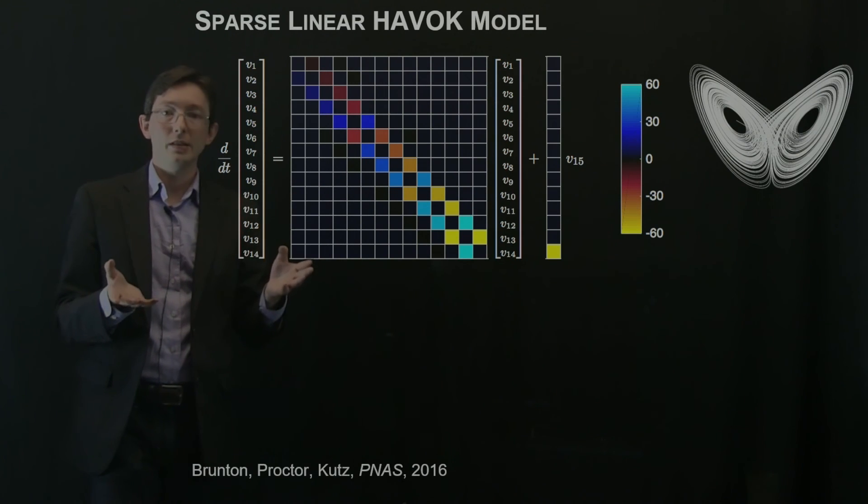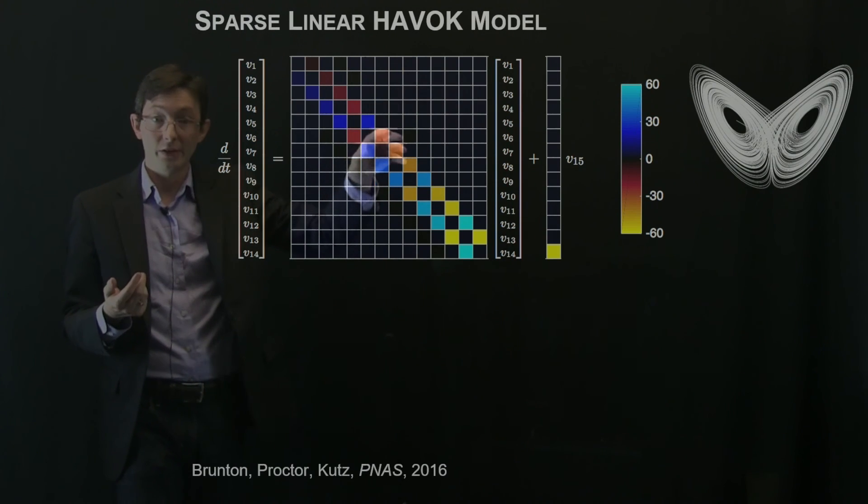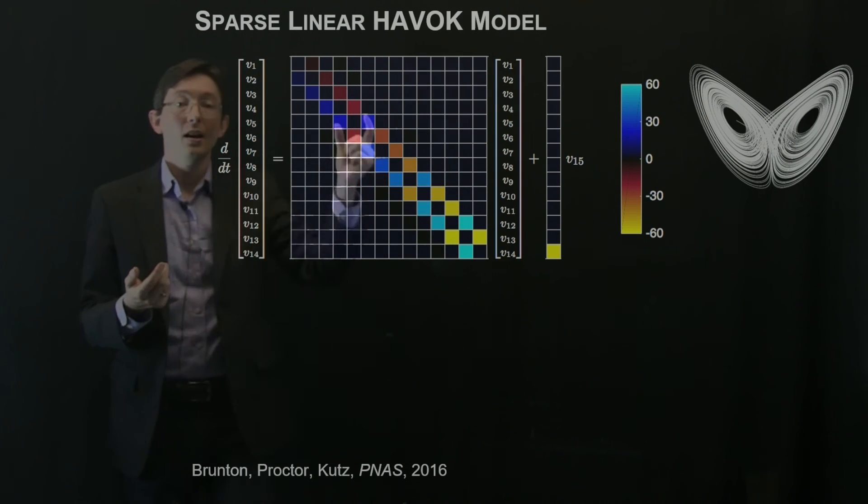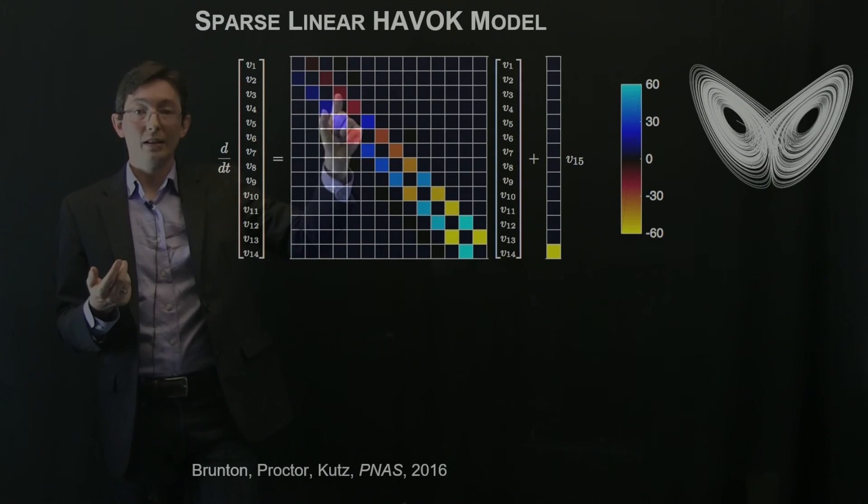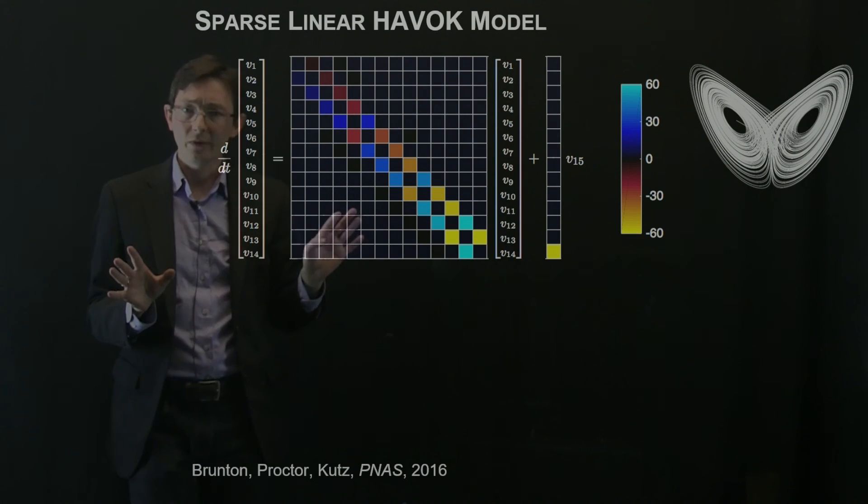A couple of things you notice right off the bat: it's sparse and it's off-diagonal. Most of the entries are zero. The only ones that are non-zero are these off-diagonal entries and they come in equal opposite pairs. This is kind of anti-symmetric. If you have positive here, you have negative here and so on and so forth.